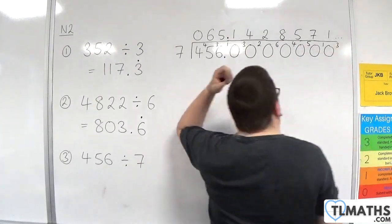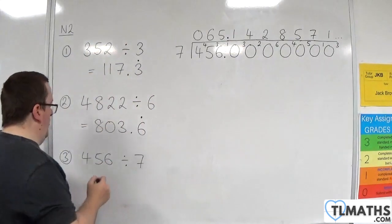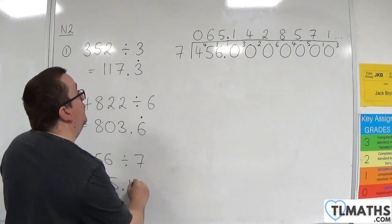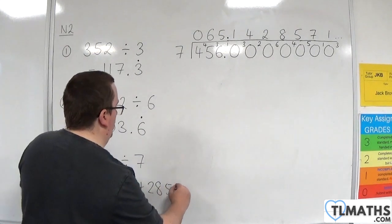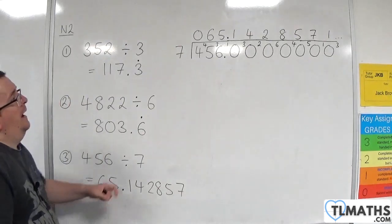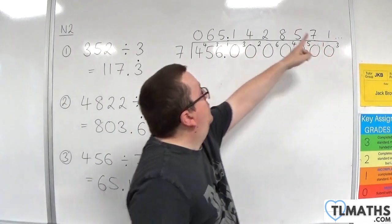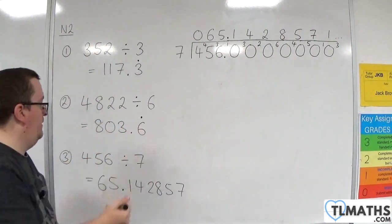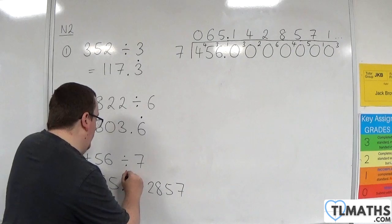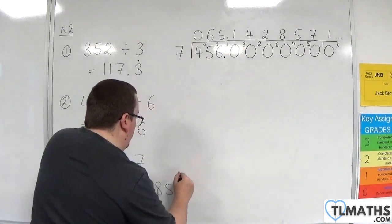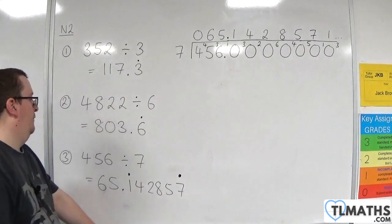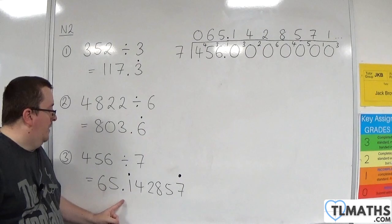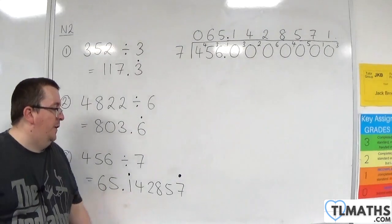We've ended up with 65.142857. Then the next one is 1, then 4, then 2, then 8, then 5, then 7. Then 142857 again. The 142857 is the piece that is repeating itself over and over again. So 456 divided by 7 is 65.142857 recurring.